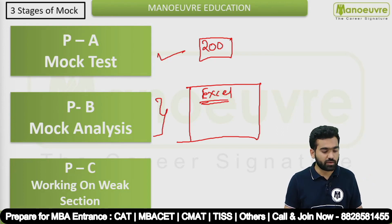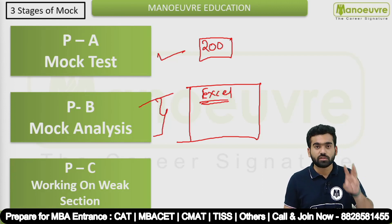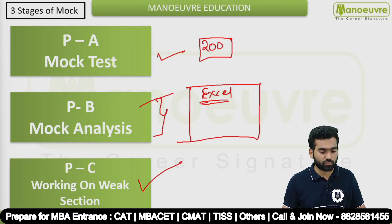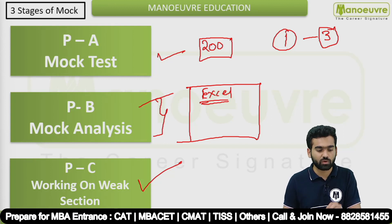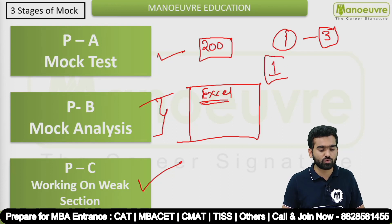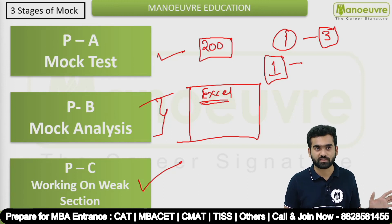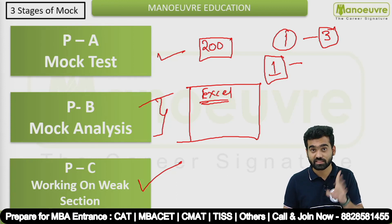Every mock ka data hona chahiye. Let's say first mock diya, analysis kiya - 2 din uski implementation ke liye do. Jo weak points hain aapke weak section se, uske liye 3 days do. First mock - 2 din ka break, implementation ke liye jo bhi weak area hai implement karo, then go for second mock. Every week you will get two mocks, and within five weeks you can complete 10 mock tests. But the most important thing is implementation - yeh bahut jagah miss hota hai.